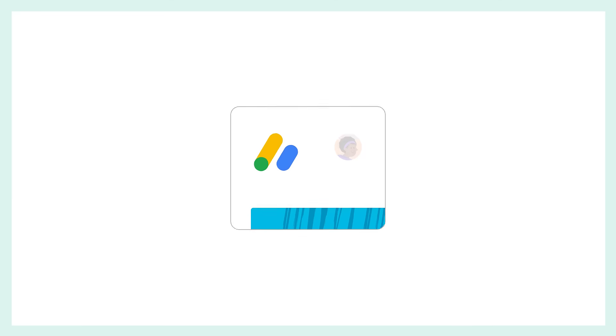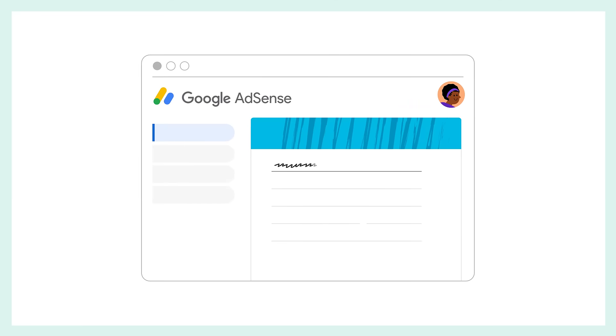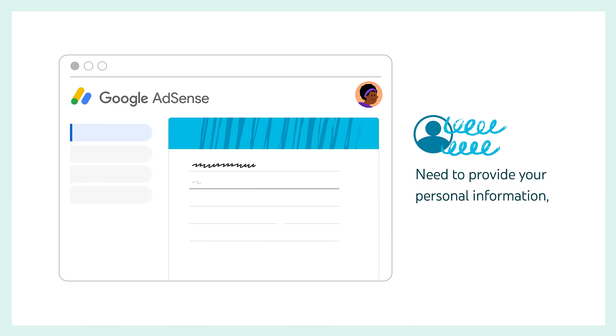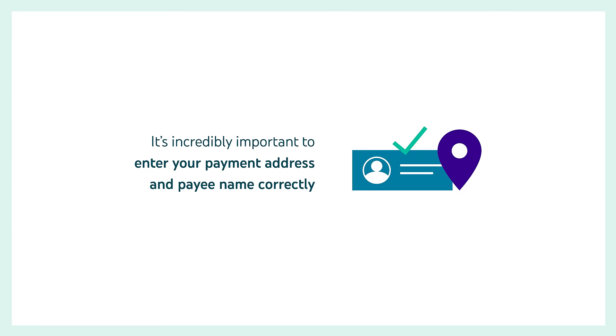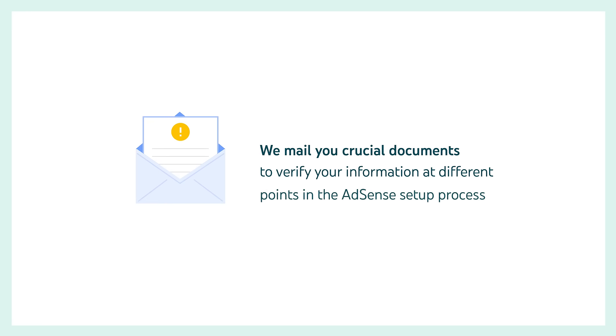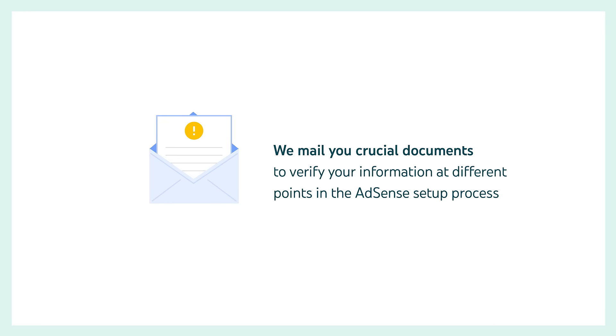If you're not sure if you have an existing account, select 'I don't know' and complete the flow. It's important you don't attempt to create a new AdSense account if you already have an existing one, because this can cause delays in your application process. Note that you can link multiple channels to a single AdSense account. Once you're in AdSense, if you're setting up a new account, you'll need to provide your personal information, including your address. It's incredibly important to enter your payment address and payee name correctly, because we mail you crucial documents to verify your information at different points in the AdSense setup process.